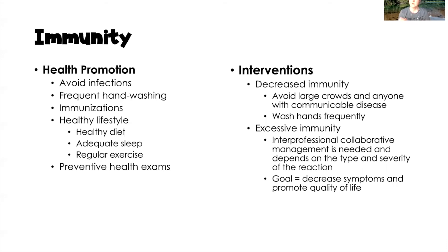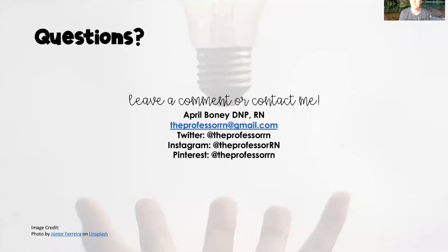For interventions targeting decreased immunity, the focus is on infection control: hand washing, avoiding large crowds, wearing a mask, and avoiding people with communicable diseases. For excessive immunity, this requires interprofessional collaboration depending on the type and severity of the reaction. For example, lupus — an autoimmune disorder affecting many body systems — requires a collaborative interprofessional approach. The goal with excessive immunity is to decrease symptoms and promote quality of life.